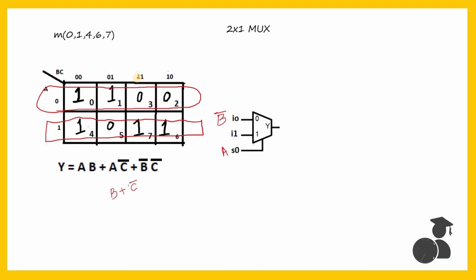When B is 1, in those two conditions, you got 1. Or when C is 0, you got 1. So I1, that is when A is 1, it will be B + C-bar. Notice that in the representation using the 2-to-1 mux and the previous 4-to-1 mux, apart from the mux itself, we will also be needing basic gates. Here we are requiring two NOT gates and an OR gate.